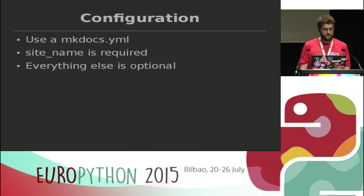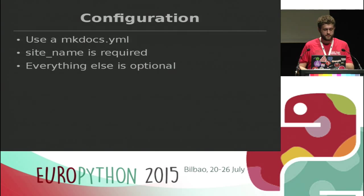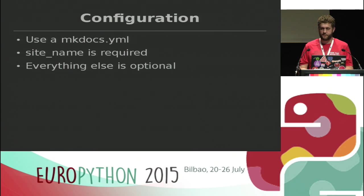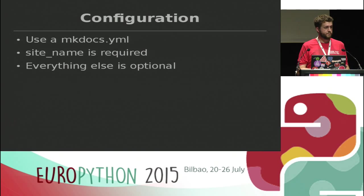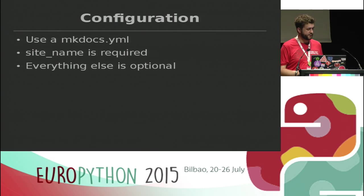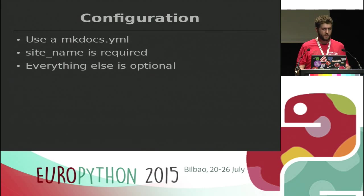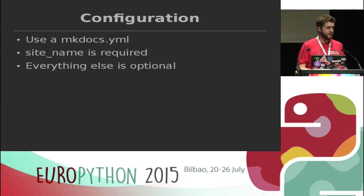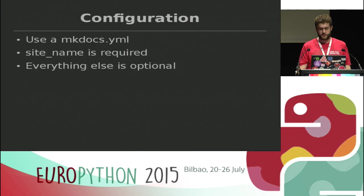You've seen the configuration file briefly during the demo. It's basically a YAML file — users shouldn't have to edit a Python file to configure their documentation. The only actual required config option is the site name. Everything else relies on sensible defaults, but you can change things like where it loads documentation from, where it builds to, what theme it's using, what pages are included or not. By default it seems sensible that you'd want to include all your Markdown files, so we just add them all, add them to the navigation, and index them in the search engine.